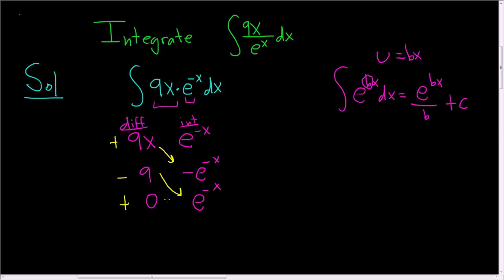And then you write the answer down. So the answer, in this case, following the arrows, is negative 9x e to the negative x. And then again it's negative here because we have a negative sign here. So minus 9 e to the negative x plus c.